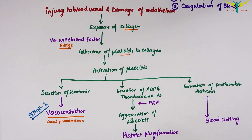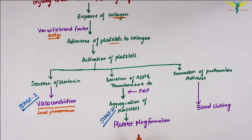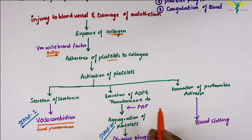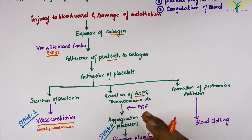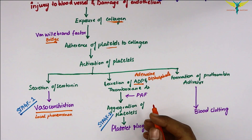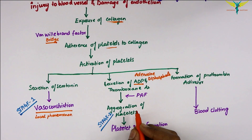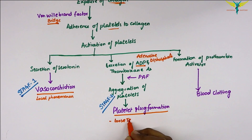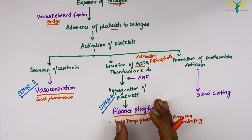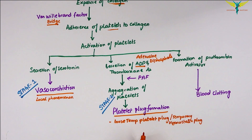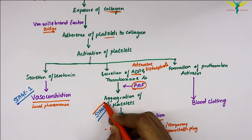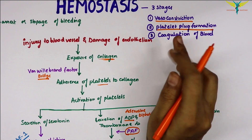Stage two is platelet plug formation. Platelets adhere to the collagen of the ruptured blood vessel and secrete adenosine diphosphate (ADP) and thromboxane A2. These substances attract and activate more platelets, causing them to aggregate together, forming a loose temporary platelet plug — also called a temporary hemostatic plug — which closes the ruptured blood vessel and prevents further blood loss. Platelet aggregation is accelerated by the platelet activating factor.